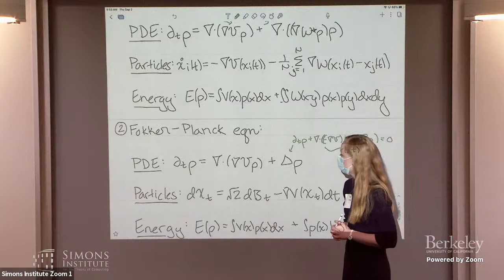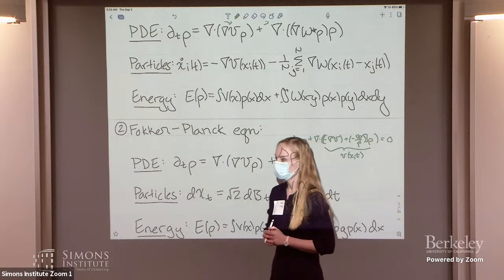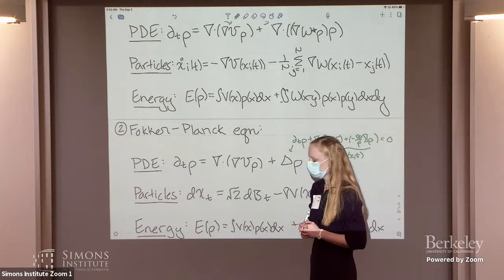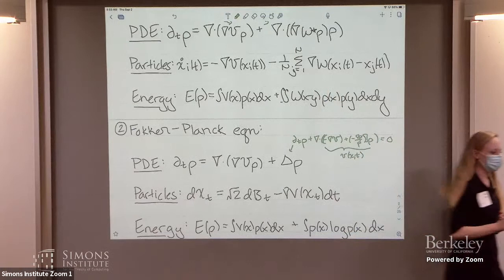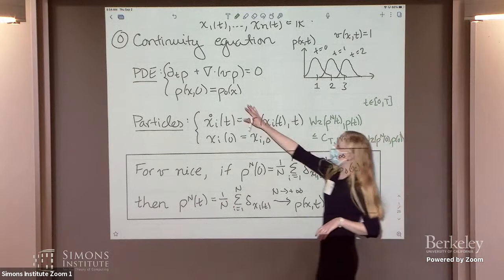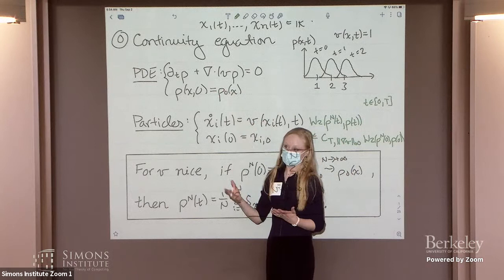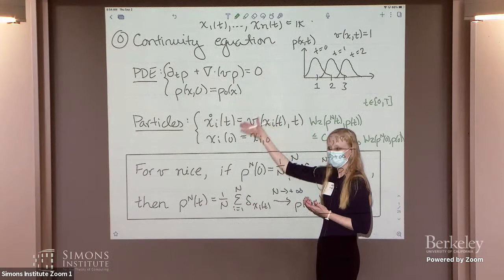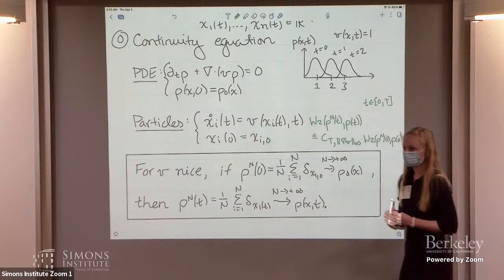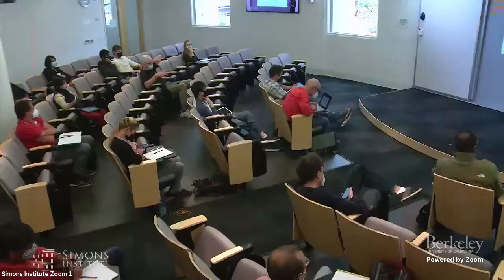A further question: are there rules for deriving the particle representation from the PDE? At the level of the continuity equation, yes—if the velocity field is sufficiently nice, you just take the ODE with the same velocity field, which is not a creative rule. The problem is that in practice we care about many equations where the velocity field does not satisfy the required properties for the system of ODEs to be well-posed, so one must exercise creativity in deriving the particle method.